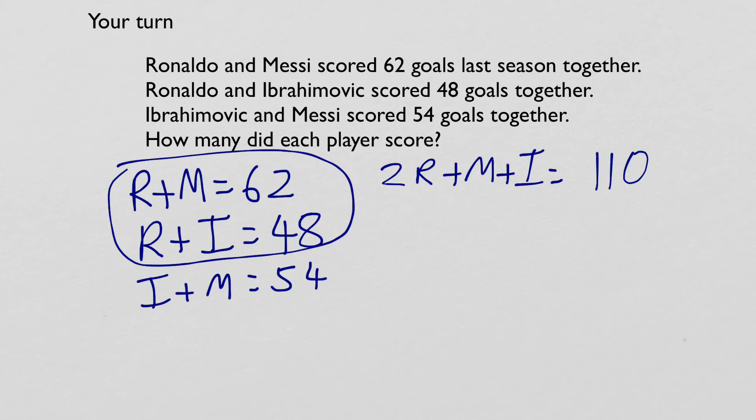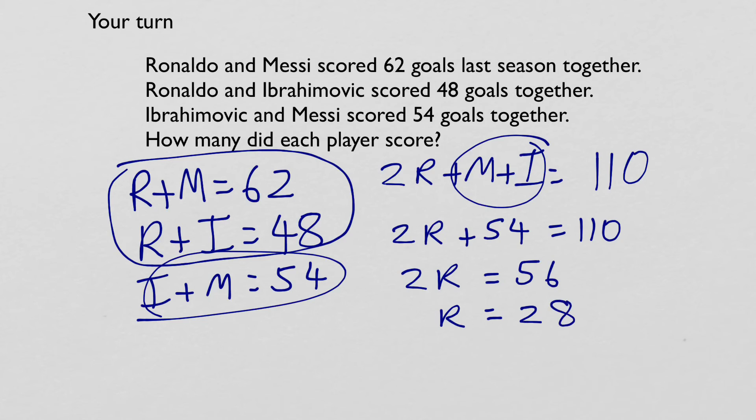And I'll use the third equation. I plus M equals 54. So that just replaces that. Two R plus 54 equals 110. So then two R equals 56. And one R is half of that. So Ronaldo scored 28 goals. Not a bad return.